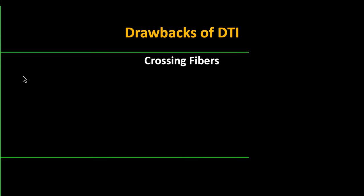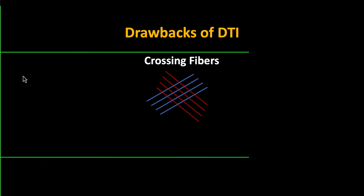Just have a few more slides before we get into the practical part. It's worth talking about the drawbacks of DTI. Notice — if I'm being careful with my words — you do not collect a DTI scan; you collect a diffusion weighted scan. Diffusion tensor imaging is what you do afterwards: you fit these tensors and calculate things like FA and MD. The most pressing drawback of DTI is the so-called crossing fibers problem.